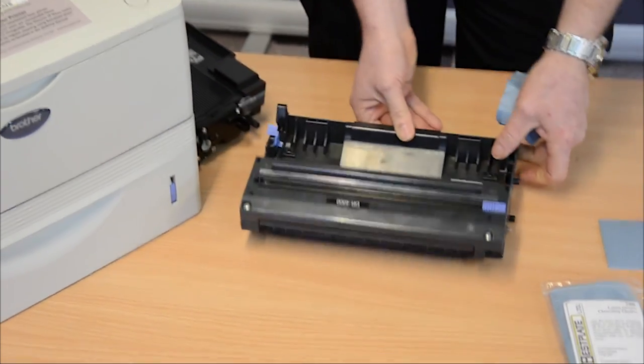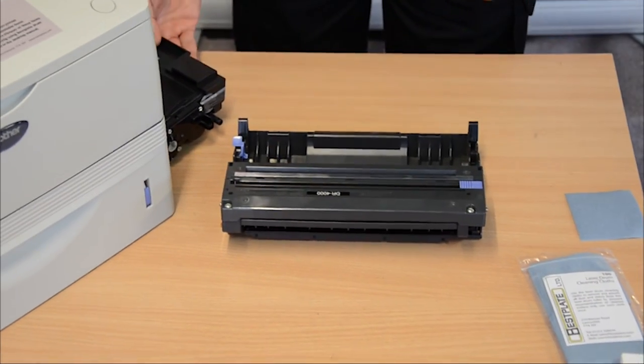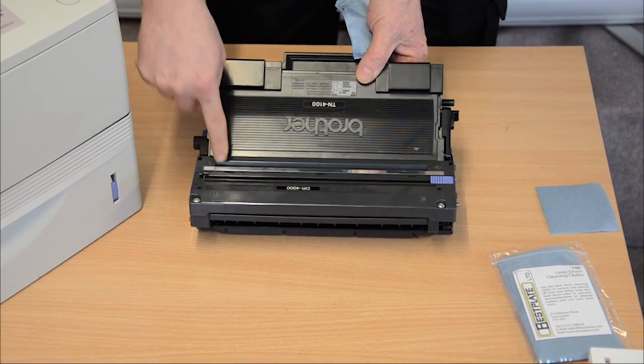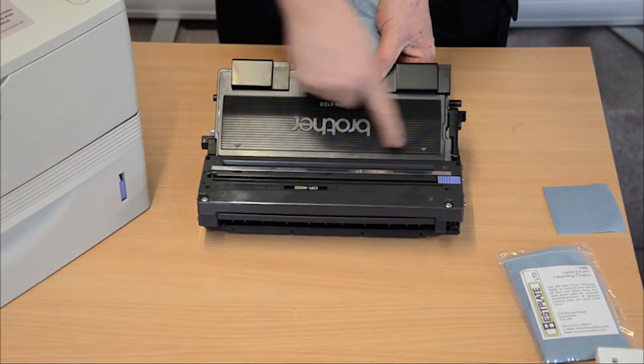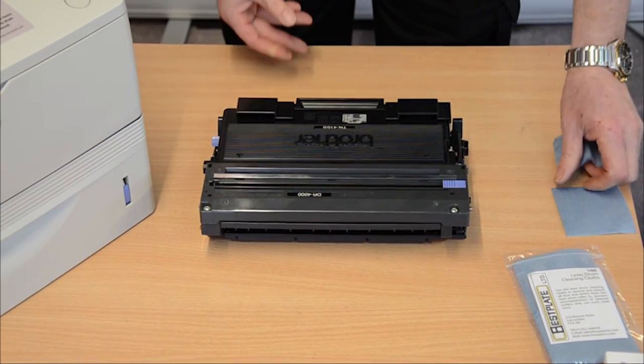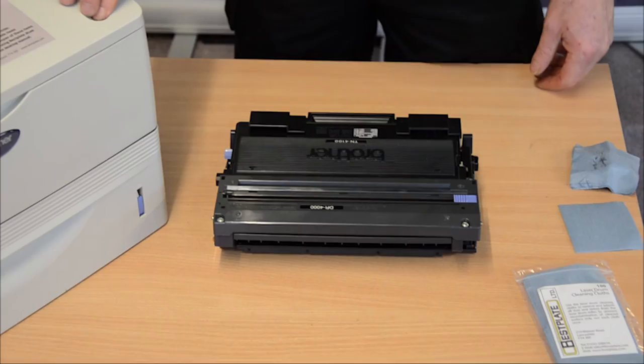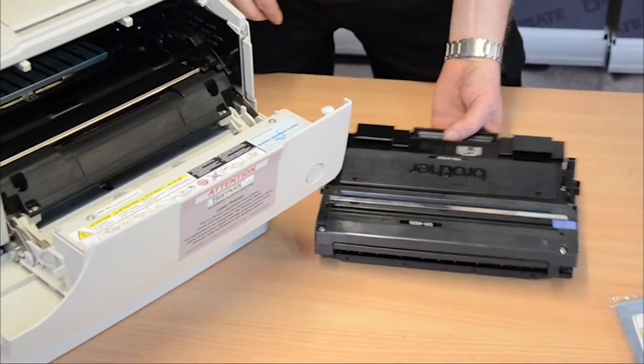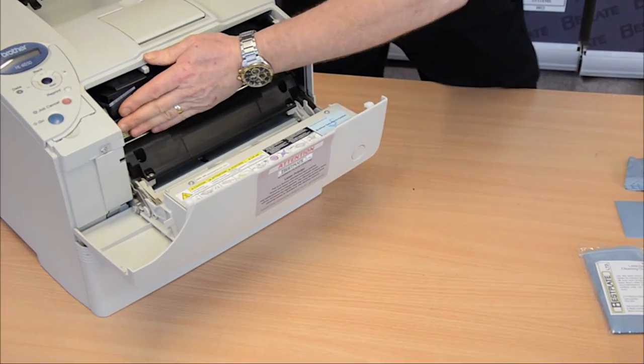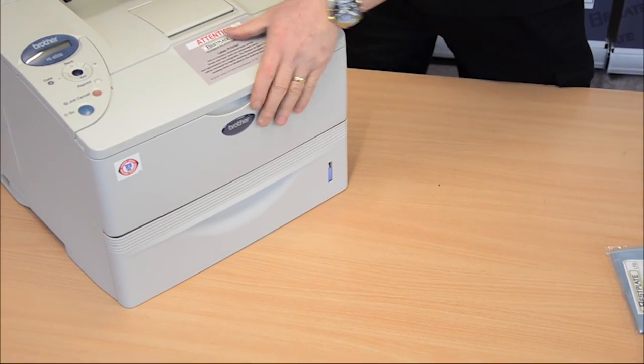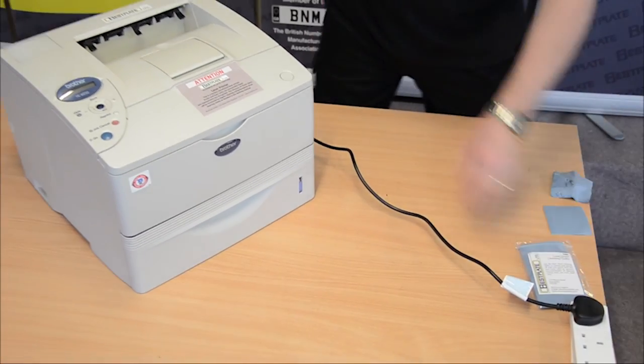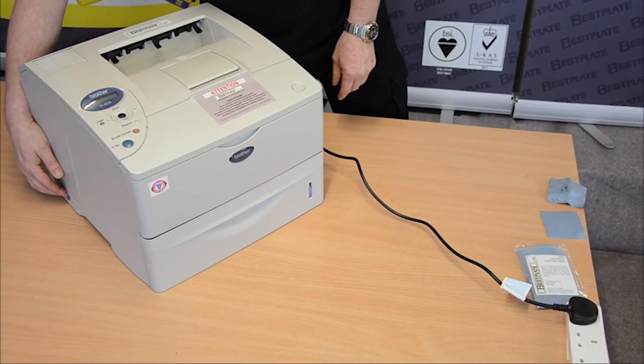Once the drum is clean, reverse the process, put the toner cartridge back into the drum, locating arrows with arrows, clip it back down into place. Next, open up the printer, take the full unit, place that back into the printer, close the front door, turn the plug to the power and turn the printer on.